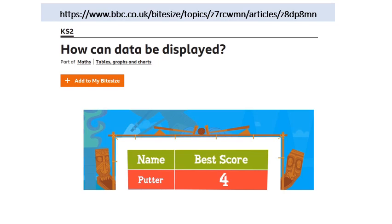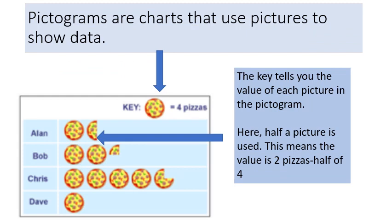This is recapping prior learning. Pictograms are charts that use pictures to show data — just another way information can be presented. If we look at the image, we have a key at the top which tells us the value of each picture in the pictogram. In this key, a pizza image equals four pizzas, so where you see half a pizza the value is half of four, which equals two pizzas. Another word for pictogram is pictograph.